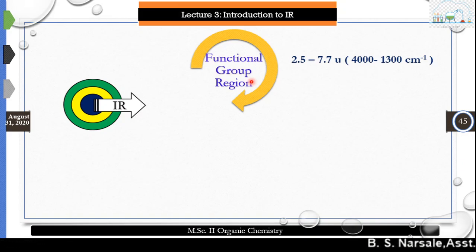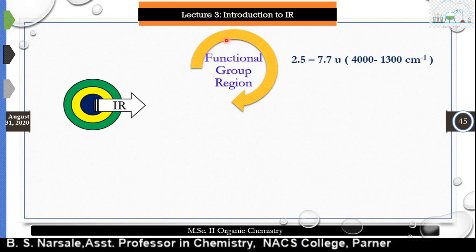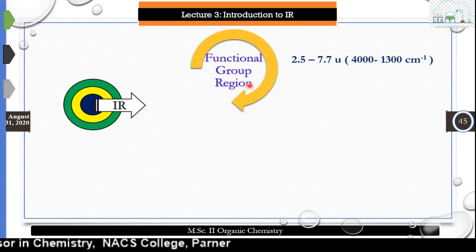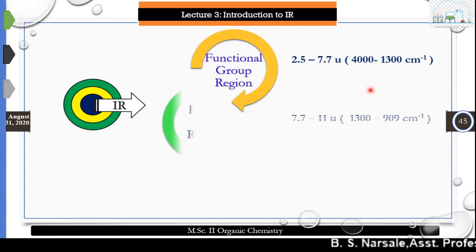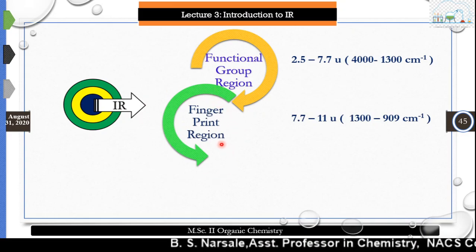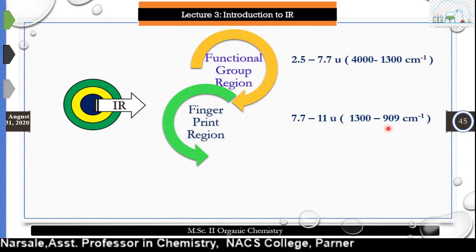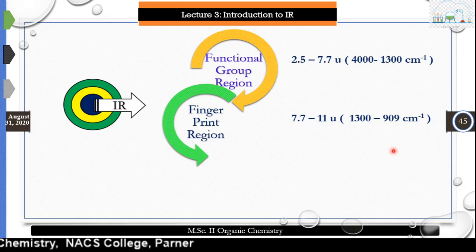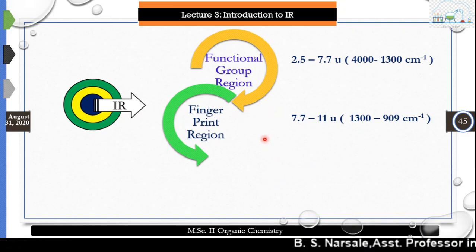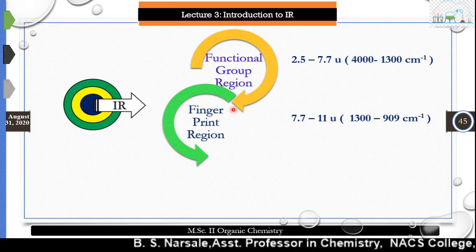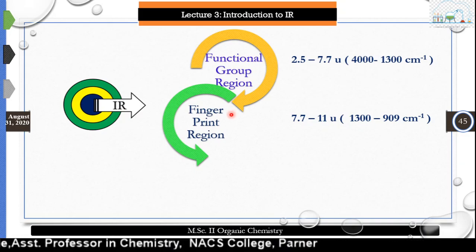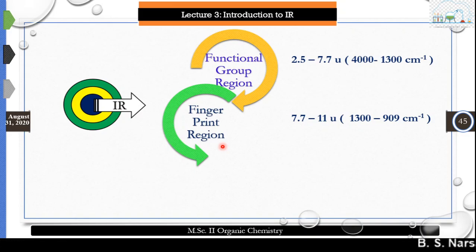The functional group region covers CH of alcohol, amines, alkyne terminal CH, thiols, aromatic compounds, double bonds, and triple bonds — all present in the region from 1,300 to 4,000 cm⁻¹. The second region is the fingerprint region, ranging from 7.7 to 11 micrometers, that is 1,300 cm⁻¹ to 909 cm⁻¹. It is very complex and characteristic for a specific molecule. The bands appearing in this region are specifically due to bending and skeletal vibrations of carbon-carbon, carbon-oxygen, or carbon-nitrogen bonds.